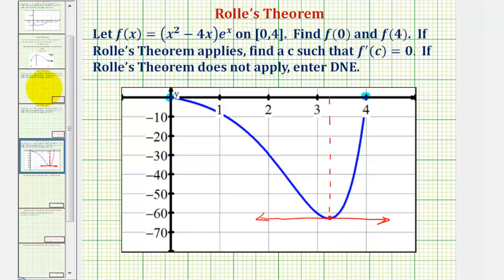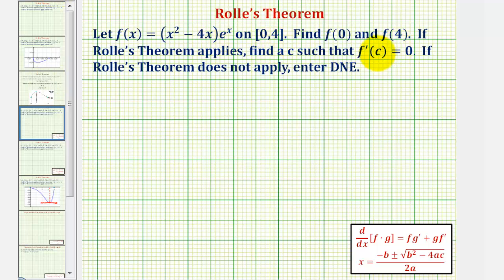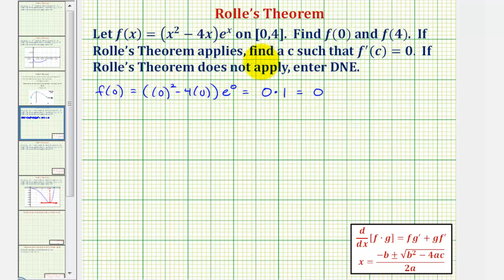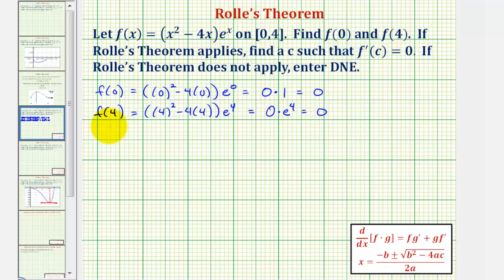Let's begin by verifying algebraically that f of zero equals f of four. f of zero equals zero squared minus four times zero, times e to the zero — that's the quantity zero minus zero, which is zero, times e to the zero which is one, giving zero. For f of four, we have the quantity four squared minus four times four, times e to the fourth — that's sixteen minus sixteen, which is zero, times e to the fourth, which is also zero. So we've verified that f of zero equals f of four.